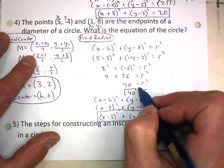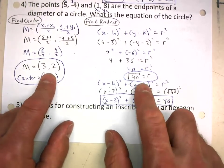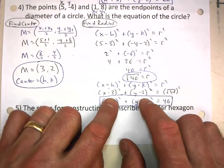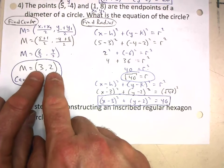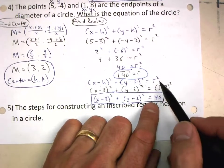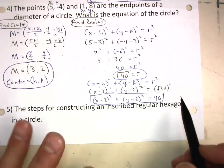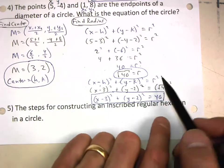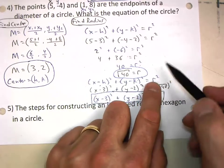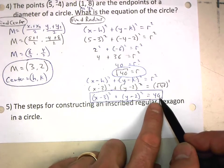Now I have the two things I need to write the equation of a circle: the center and also the radius. So I go back to the standard form of a circle and plug in what I know — the center point 3, 2, and the radius. Be careful: remember that on the right-hand side is radius squared. So please write this equation down each time; don't do this from memory. That will remind you that when you plug in the square root of 40 for r, you still need to square it. The square root of 40 squared is simply 40 by itself.